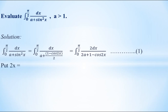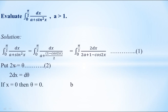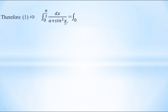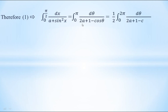Now substitute 2x = θ to convert this integral in terms of θ. Differentiating both sides gives 2 dx = dθ. Changing the limits: when x = 0, θ = 0; when x = π/2, θ = 2·(π/2) = π. So θ varies from 0 to π. Equation 1 then becomes the integral from 0 to π of dθ divided by (2a + 1 − cos θ).